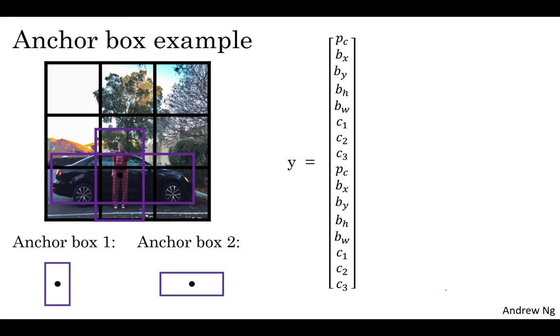So let's go through a concrete example. For this grid cell, let's specify what is Y. The pedestrian is more similar to the shape of anchor box one, so for the pedestrian we're going to assign it to the top half of this vector. So yes, there is an object, there'll be some bounding box associated to the pedestrian, and if the pedestrian is class one, then we see C1 is one and then zero, zero. And then the shape of the car is more similar to anchor box two, and so the rest of this vector will be one, and then the bounding box associated with the car, and then the car is C2, so that's zero, one, zero. And so that's the label Y for that lower middle grid cell that this arrow is pointing to.